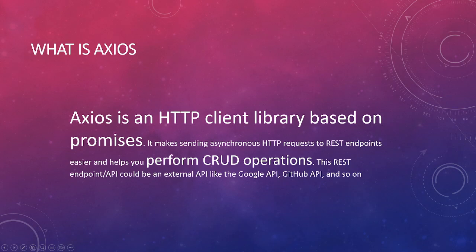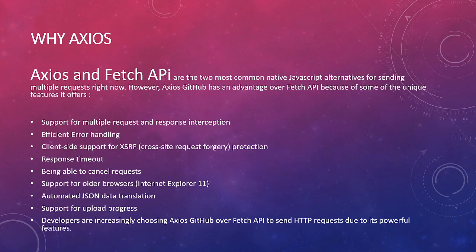Axios is much in demand nowadays. Previously developers used fetch, and both the fetch API and Axios are the most common native JavaScript alternatives for sending multiple requests. However, Axios has some advantages over the fetch API. One unique feature is support for multiple requests and response introspection — we can send multiple calls at one time to endpoints and get multiple responses.